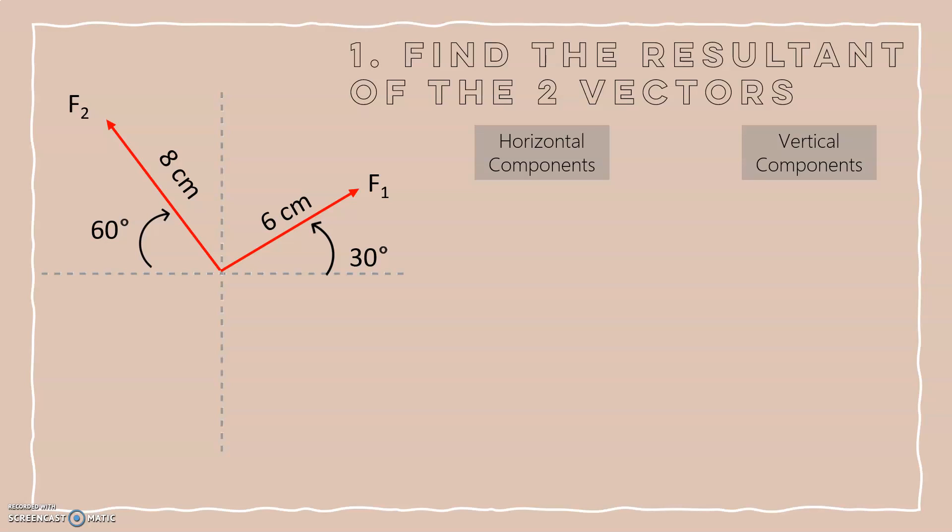The horizontal component of f1 would be 6 cosine of 30, and the vertical component of f1 would be 6 sine of 30.